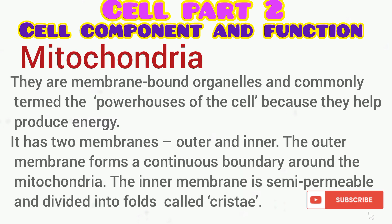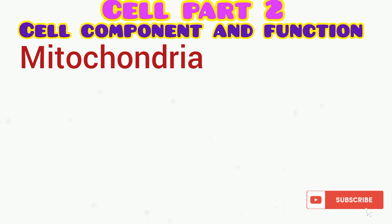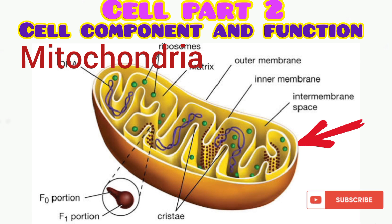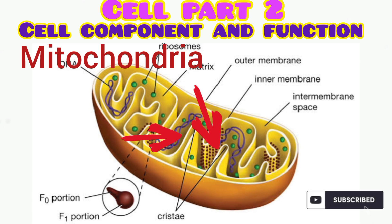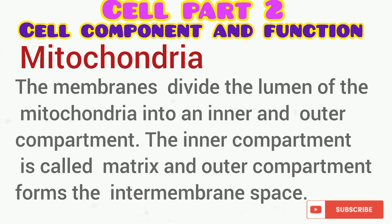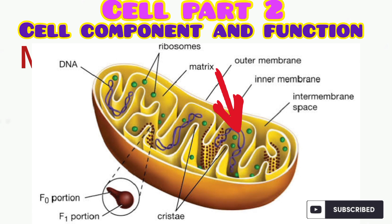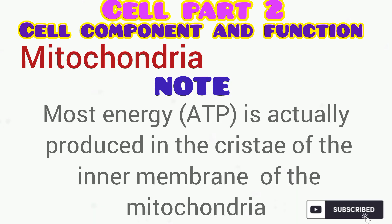Let's talk about the mitochondria. These are membrane-bound organelles commonly termed the powerhouse of the cell because their function is to produce energy. It has two membranes — the outer membrane and the inner membrane, as you can see from the diagram. The outer membrane forms a continuous layer or boundary around the mitochondrion, while the inner membrane is divided into folds called cristae. The inner membrane is semi-permeable and divides the space within the mitochondrion into the inner compartment — called the matrix — and the outer compartment, called the intermembrane space.